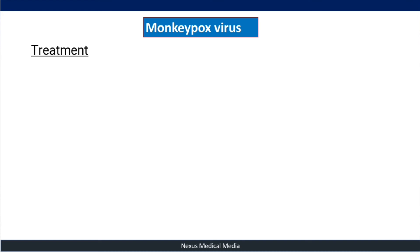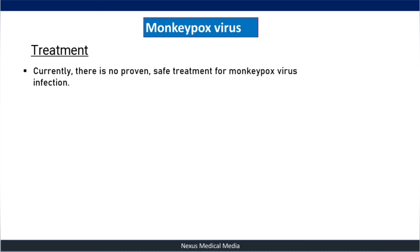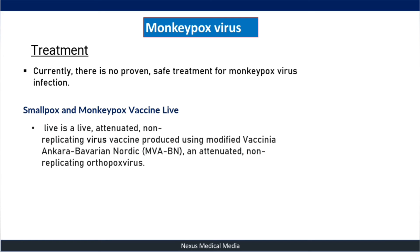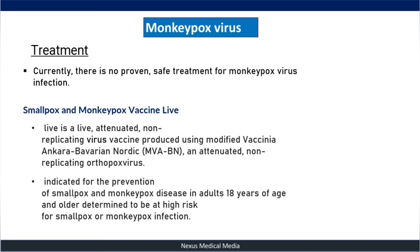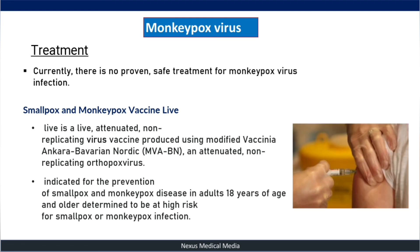Regarding treatment, there is currently no proven safe treatment for monkeypox virus infection. However, there is a combined smallpox and monkeypox vaccine: a live attenuated non-replicating virus vaccine produced using Modified Vaccinia Ankara–Bavarian Nordic (MVA-BN). This vaccine is indicated for prevention of smallpox and monkeypox in adults 18 years and older who are determined to be at risk.